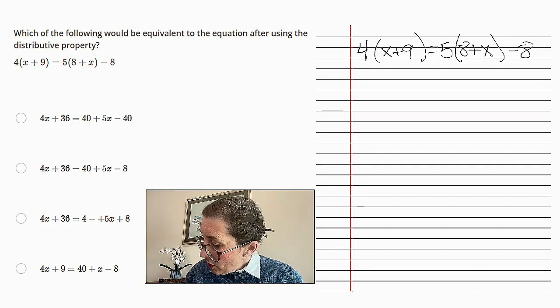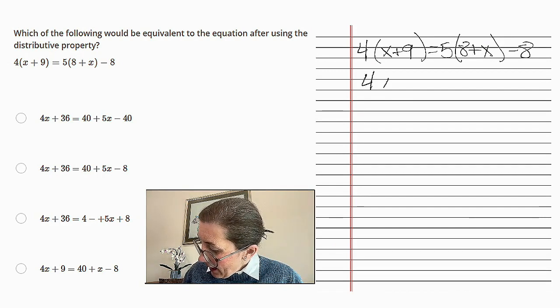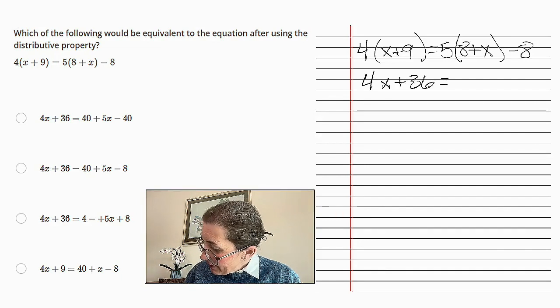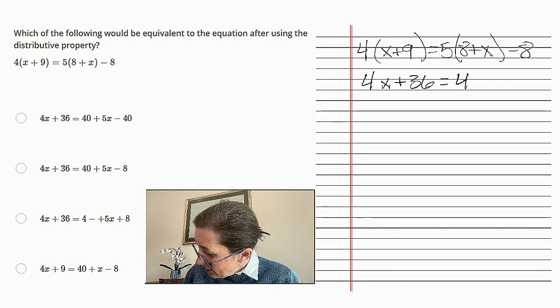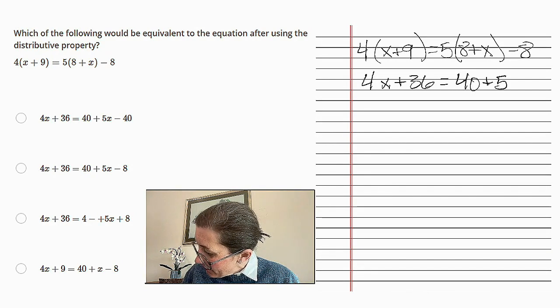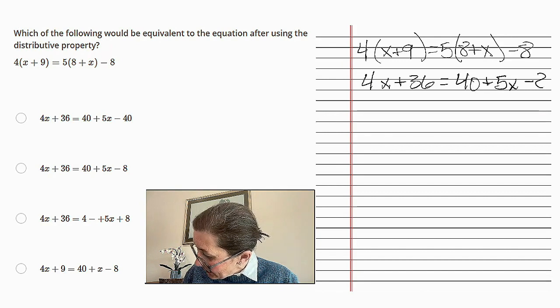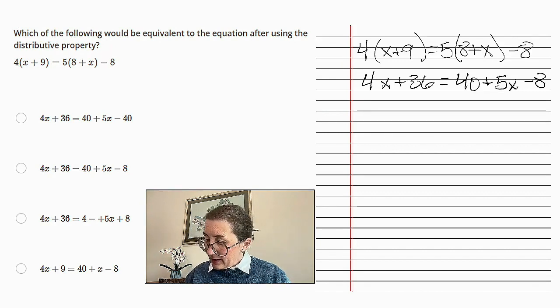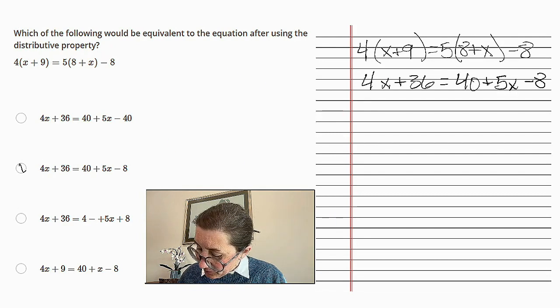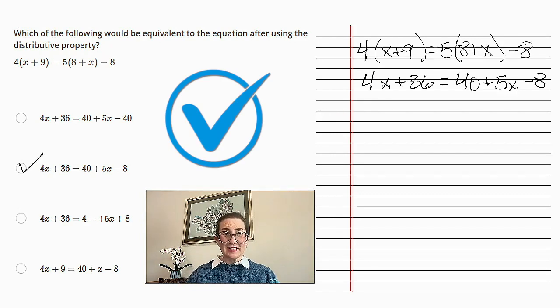So 4x plus 4 times 9 is 36 equals 5 times 8 is 40, plus 5 times x is 5x, then minus 8. Now we look at our answers and we find it right there. And there you have it.